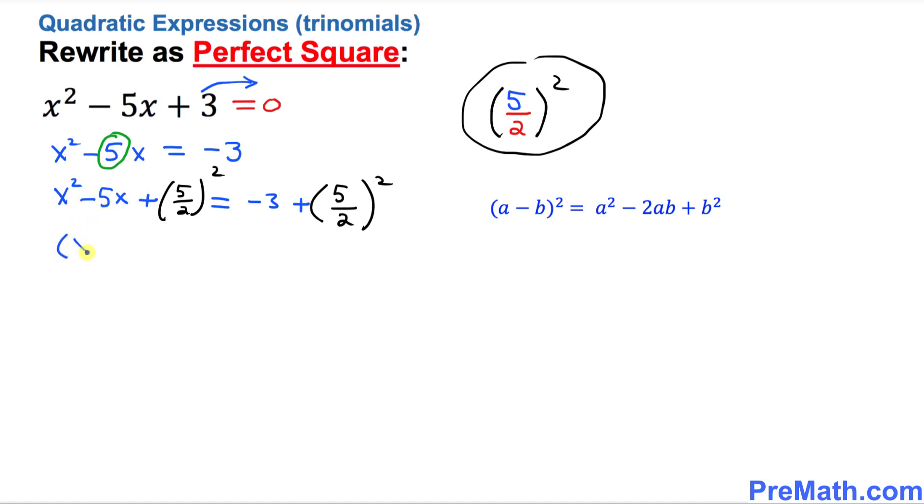I'm going to write it down as x minus 5 over 2 square. So let me show you where this is. This x, I just put it right up here. This 5 over 2, I just put it over here. And this negative, whatever this sign, shows up in the middle.